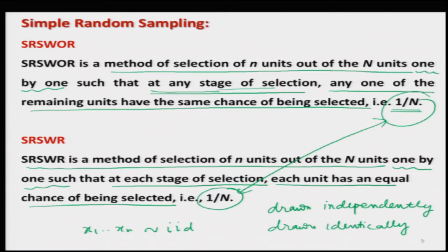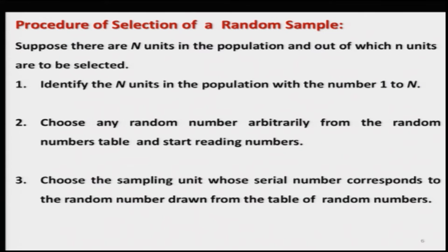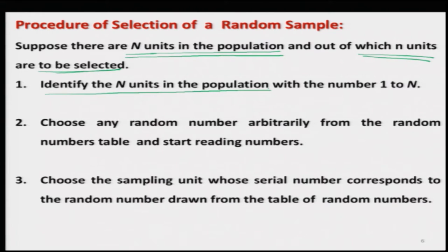Now the question is how it works and what is the methodology. First I try to explain the procedure and then show a demonstration of how to draw the sample. To understand the procedure of selection of a random sample: suppose there are capital N units in the population and our objective is to draw small n units — that will be our sample. The first step is to create a sampling frame, meaning you need to identify the capital N units in the population and give them numbers 1 to capital N.